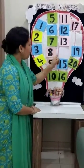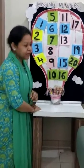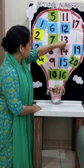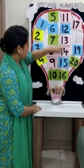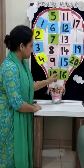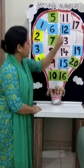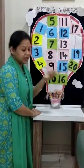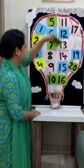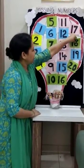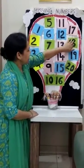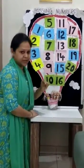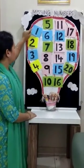Then 13, 14 is again missing. Take 14, 15, 16, 17, here is 18. Take 18, 18 is there, 19 and 20.